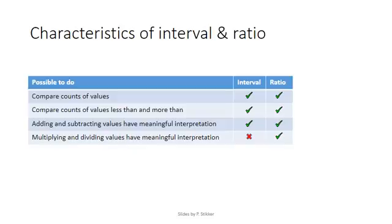Because at interval, the difference between two values is always the same, we can add and subtract values. That will then have a meaningful interpretation. However, multiplying and dividing will not have a meaningful interpretation. As we saw earlier, that ratios at interval level do not actually convert very well. So only for ratio, we can actually also multiply and divide.